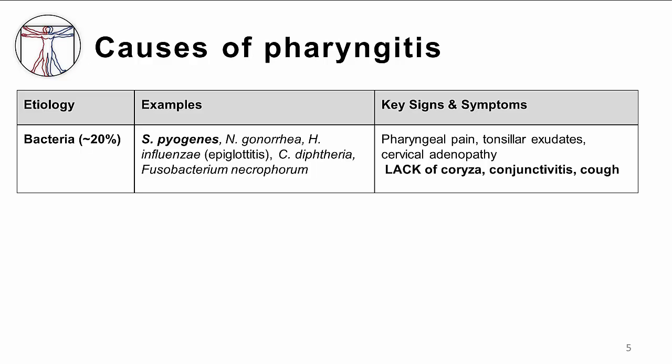Bacteria are an important but actually less frequent cause of pharyngitis. However, the reasons to accurately diagnose and treat group A strep pharyngitis include the prevention of complications such as acute rheumatic fever and peritonsillar abscess, the improvement in clinical symptoms, and the reduction in the spread of disease to close contacts. Other notable bacterial infections linked to pharyngitis include Neisseria gonorrhea in sexually active patients, Haemophilus influenzae which causes epiglottitis, Clostridium diphtheria especially in non-immunized patients, and Fusobacterium necroforum, an anaerobic infection associated with peritonsillar abscess in young people.